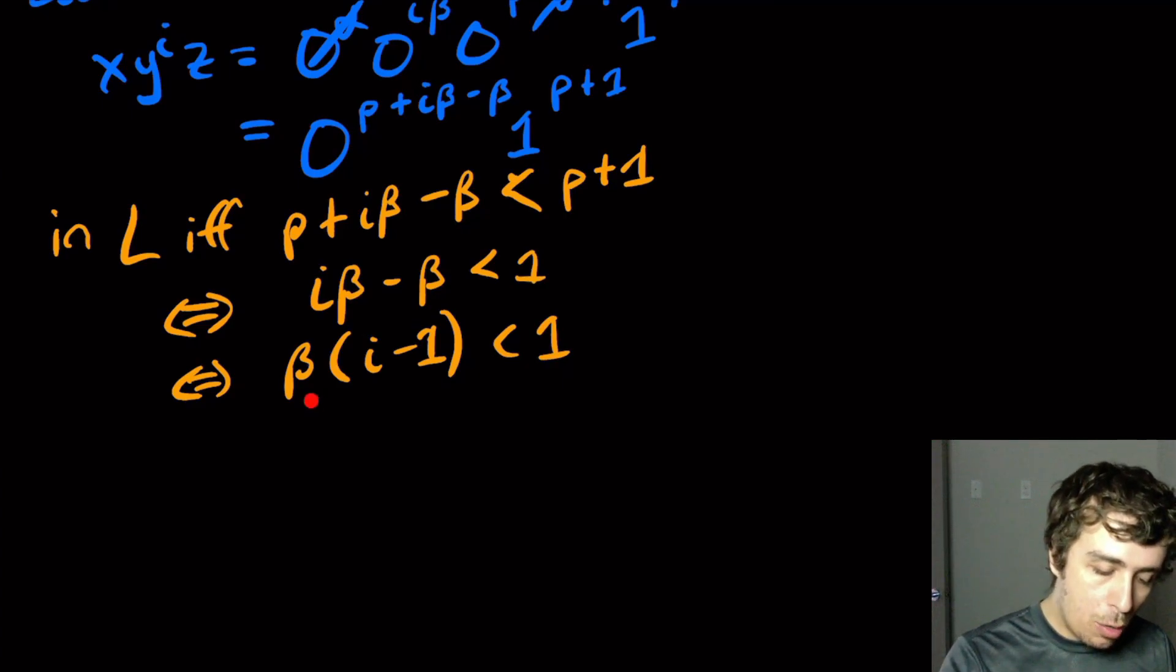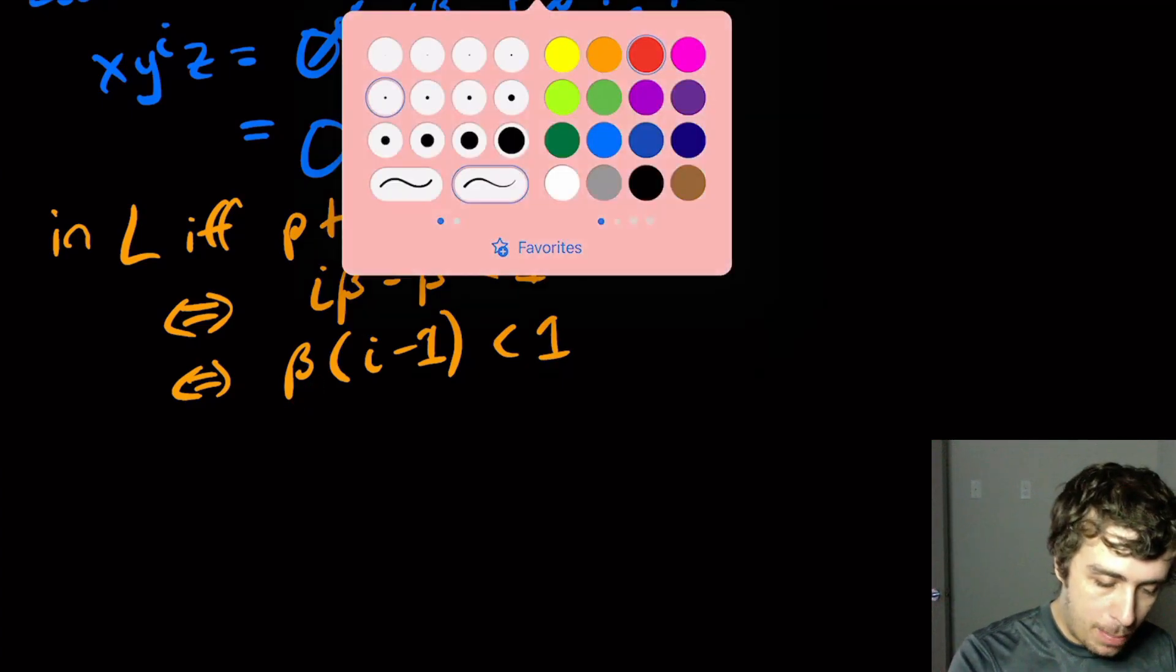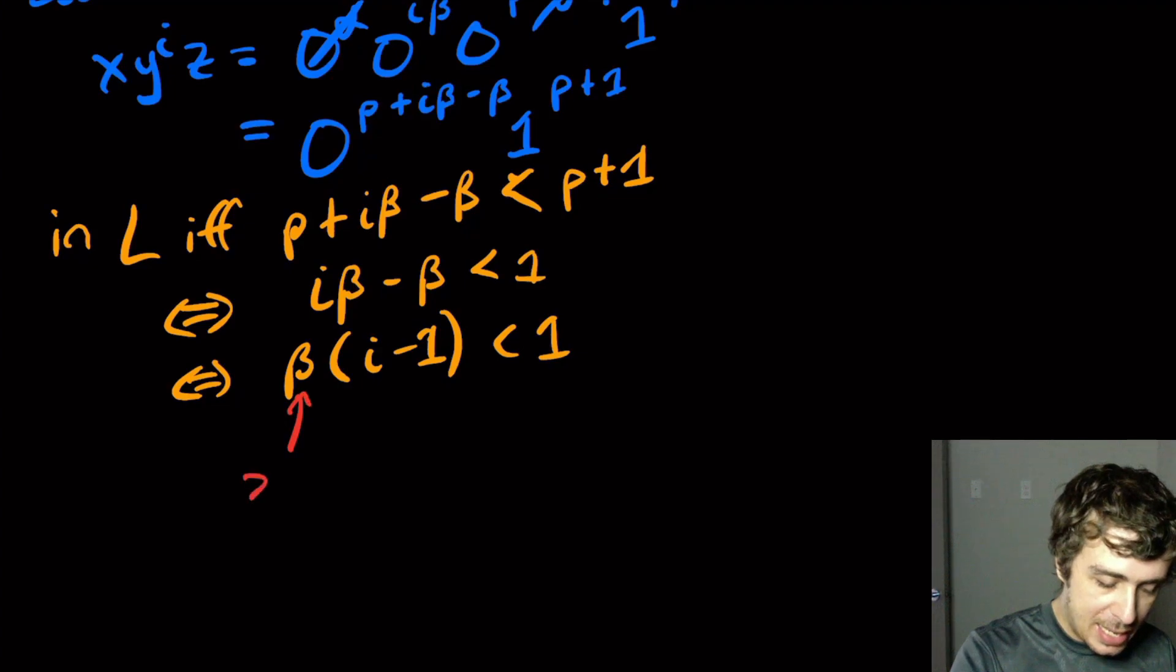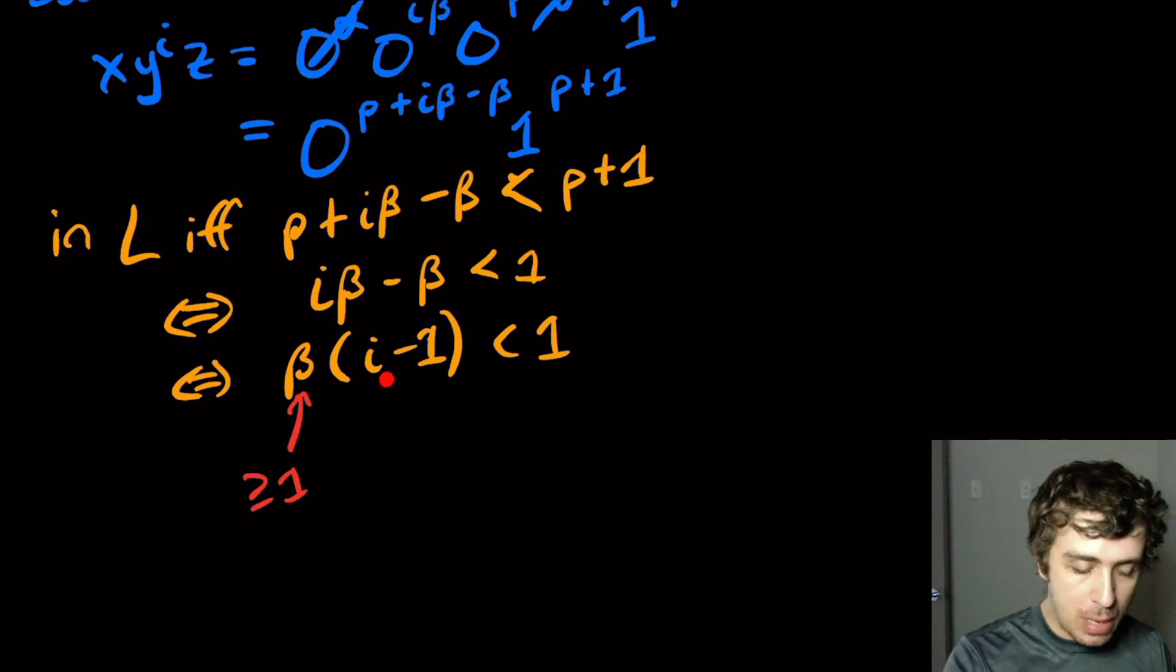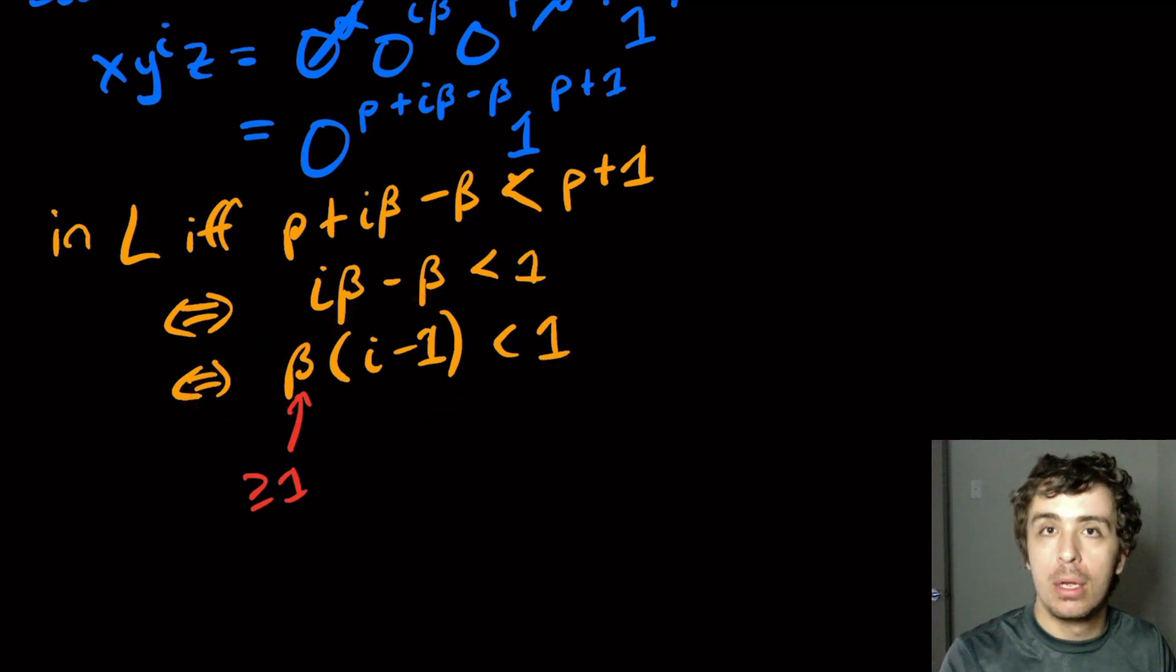And so what do we know? So we know that beta is at least 1. So that guy is at least 1. So the only way that this could be strictly less than 1 is if we choose I to be 1. Because if we pick I to be 1, or I guess if we pick I to be 0. So 1 or 0 allows this inequality to be true. But we want the inequality to be wrong because we want to be out of the language. So let's pick I equal 2.